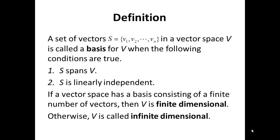Let us start with a few definitions. Number 1, a set of vectors S defined by the vectors V1, V2, Vn in the vector space V is said to be a basis for V if and only if the following two conditions are satisfied.